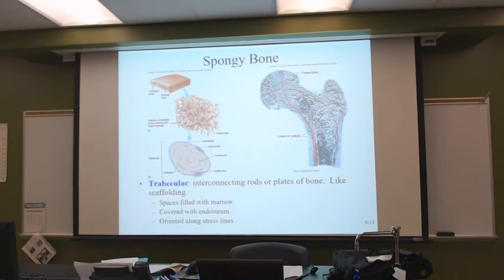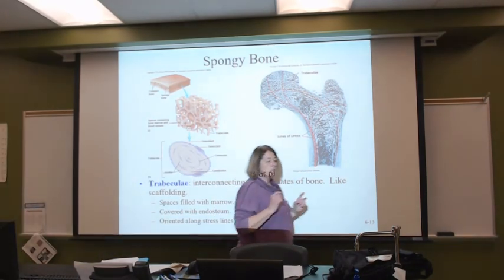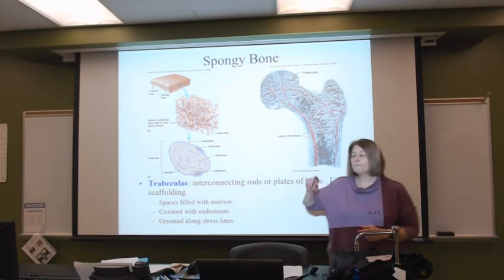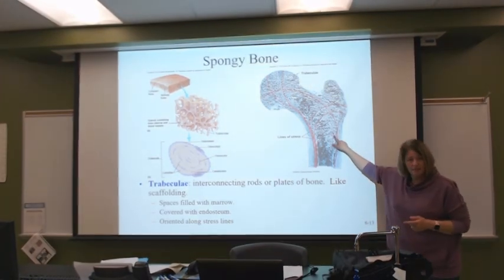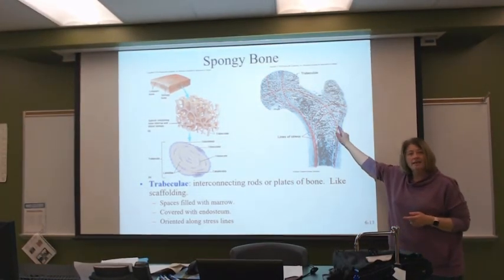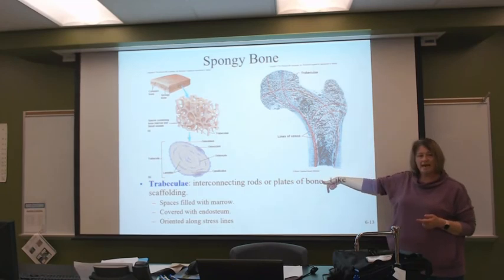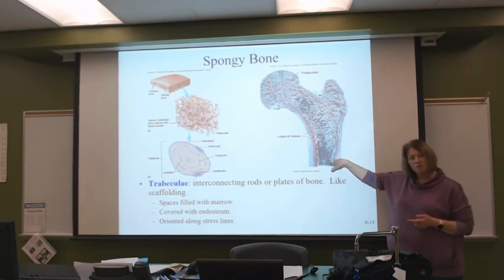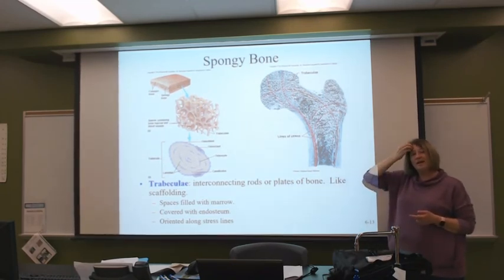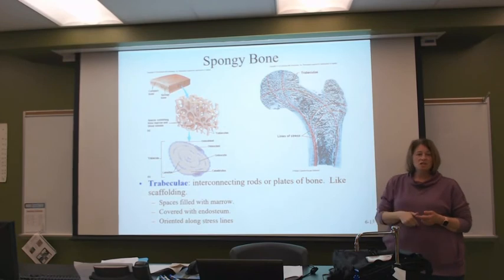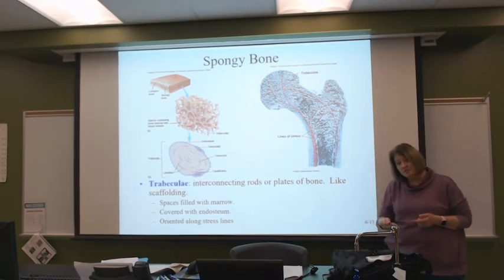We find that spongy bone is more prevalent in an area of stress than through the shaft. You can see the difference — it's because spongy bone gives strength.